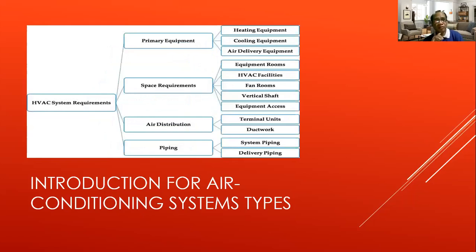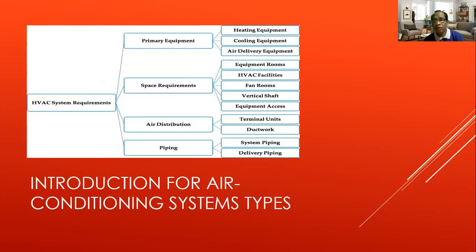Still in the introduction — S-box system requirements. The requirements are: primary equipment, space requirements, air distribution, and piping. For those who already work with industrial air conditioning, they are familiar with these. People working in the air conditioning industry with large units like cooling towers and the biggest AC systems all started with the basics.